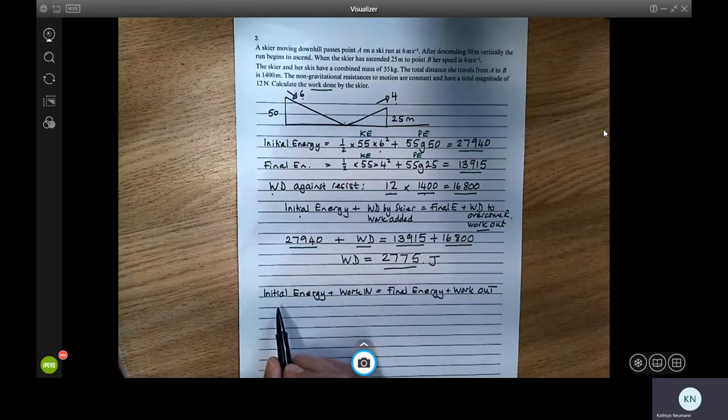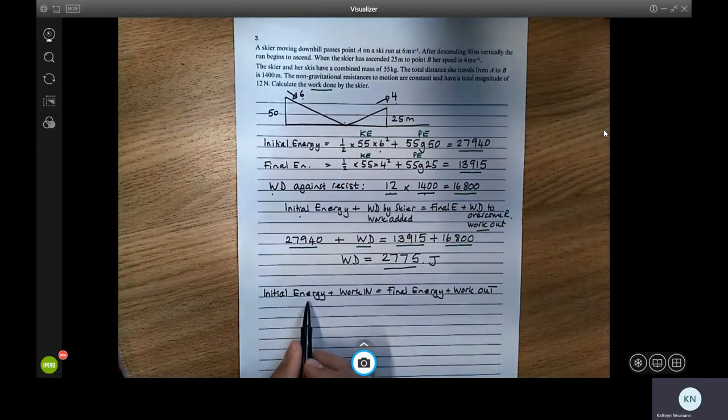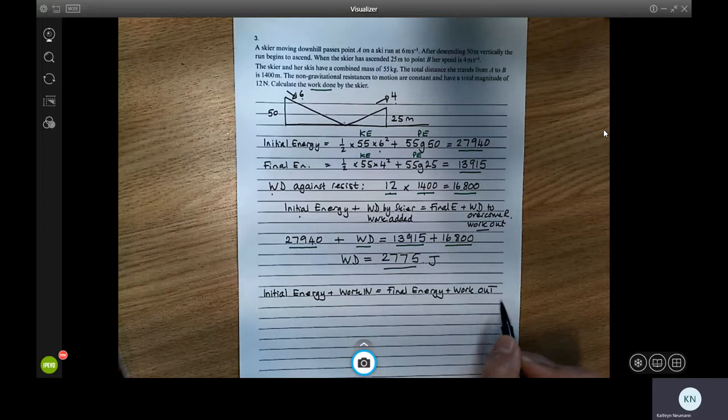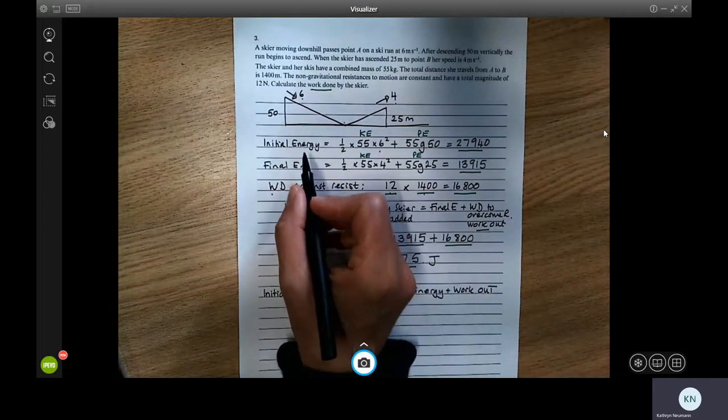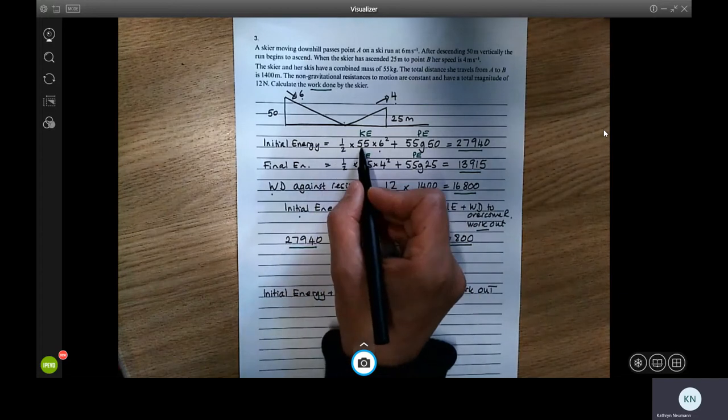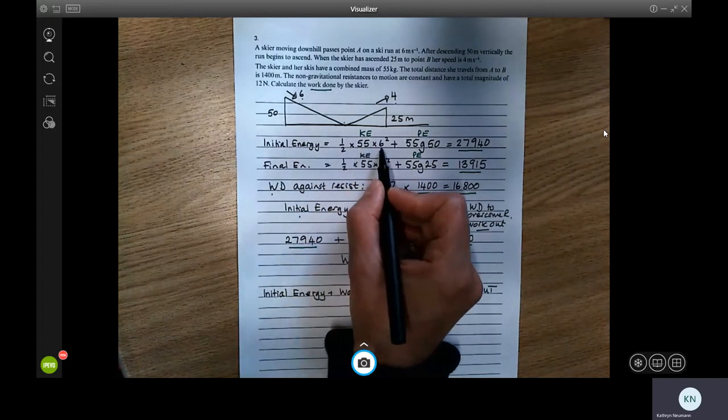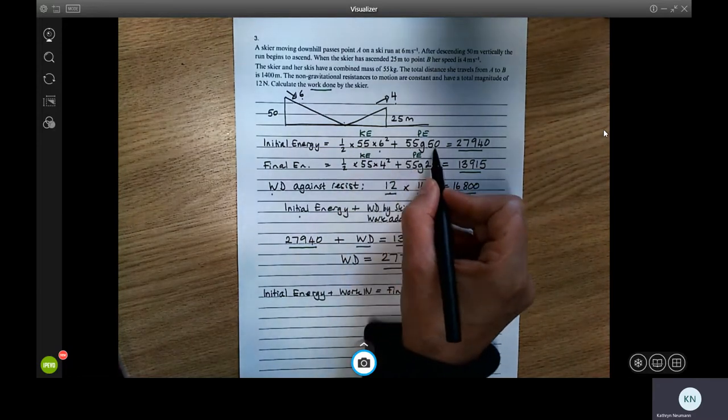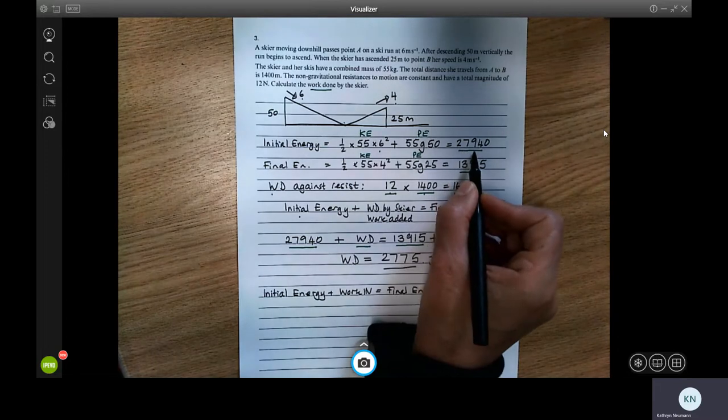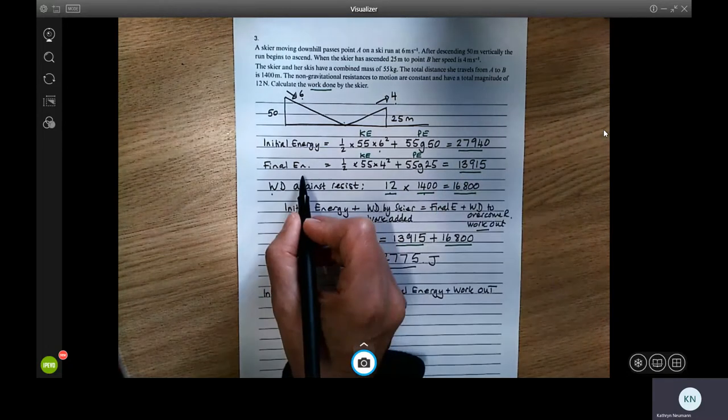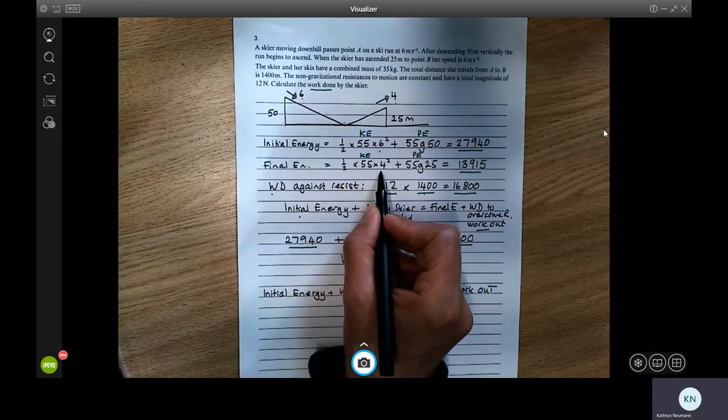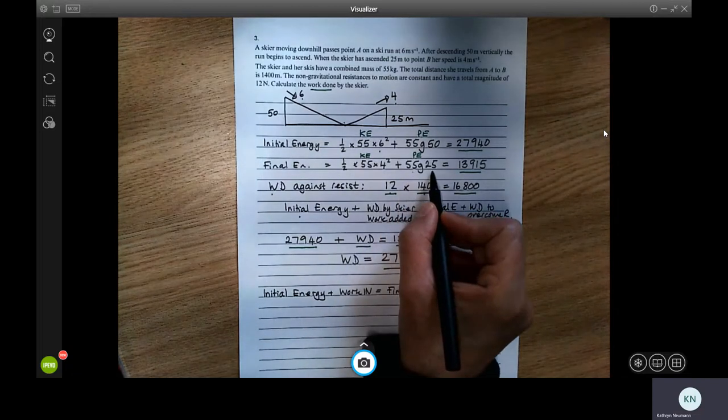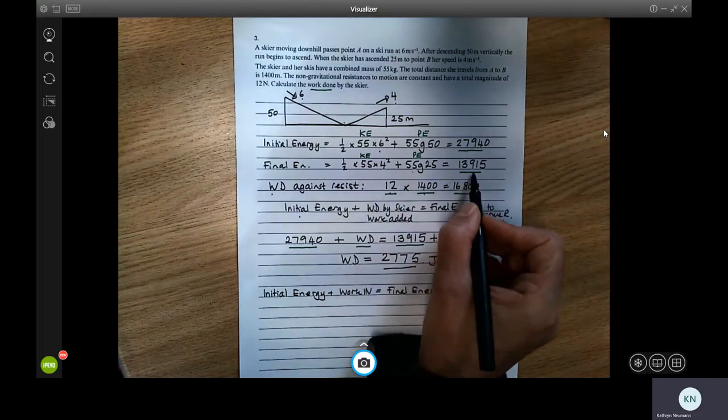So we're going to use this form of the work energy principle. We're going to say that the initial energy plus the work that's put into the system is equal to the final energy plus the work that comes out of the system. The initial energy is a half mv squared, so a half 55 times 6 squared. It's the kinetic energy plus the potential energy is mgh and that comes to 27,940. The final energy is a half mv squared with v being 4 plus mgh 55 times g times 25, and that comes to 13,915.